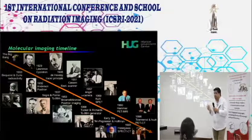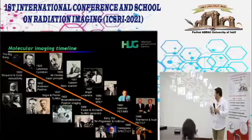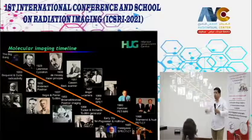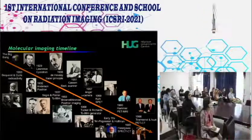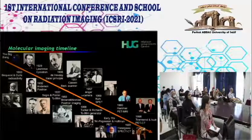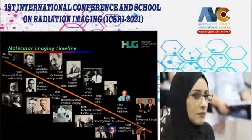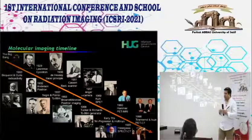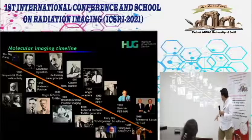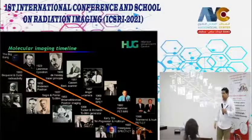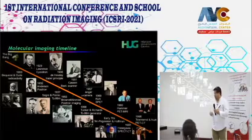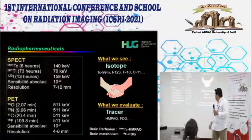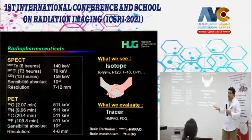De Hevesy started with small animals, injecting radioactive tracers and monitoring their progress within the body using external detectors—the tracer principle. Anger developed the gamma camera. Hoffman and Ter-Pogossian developed the concept of positron emission tomography.